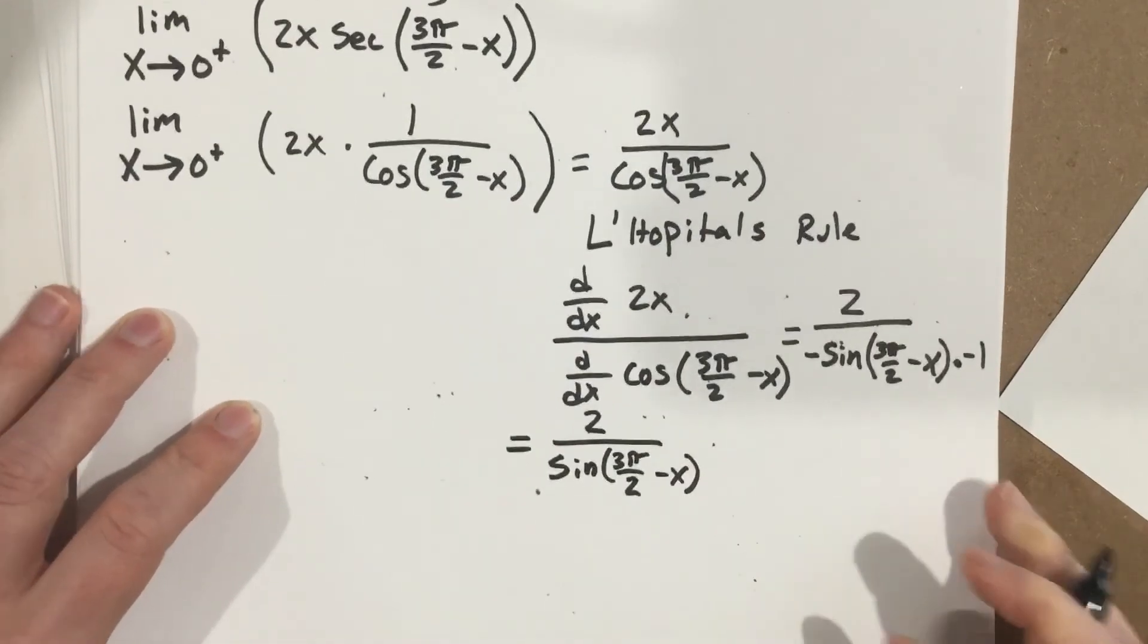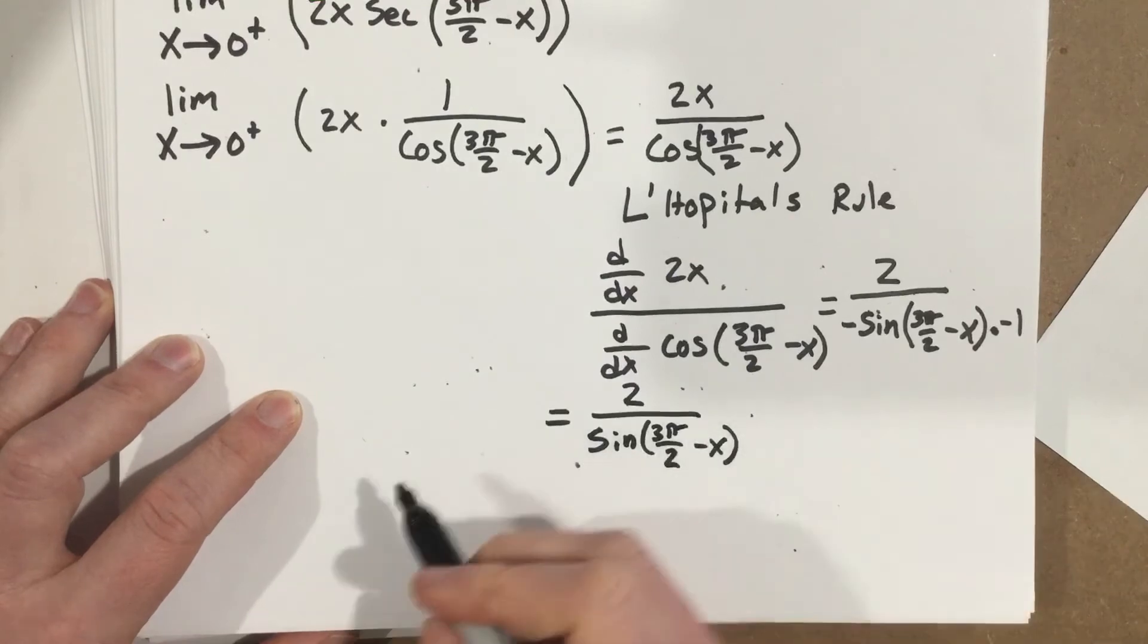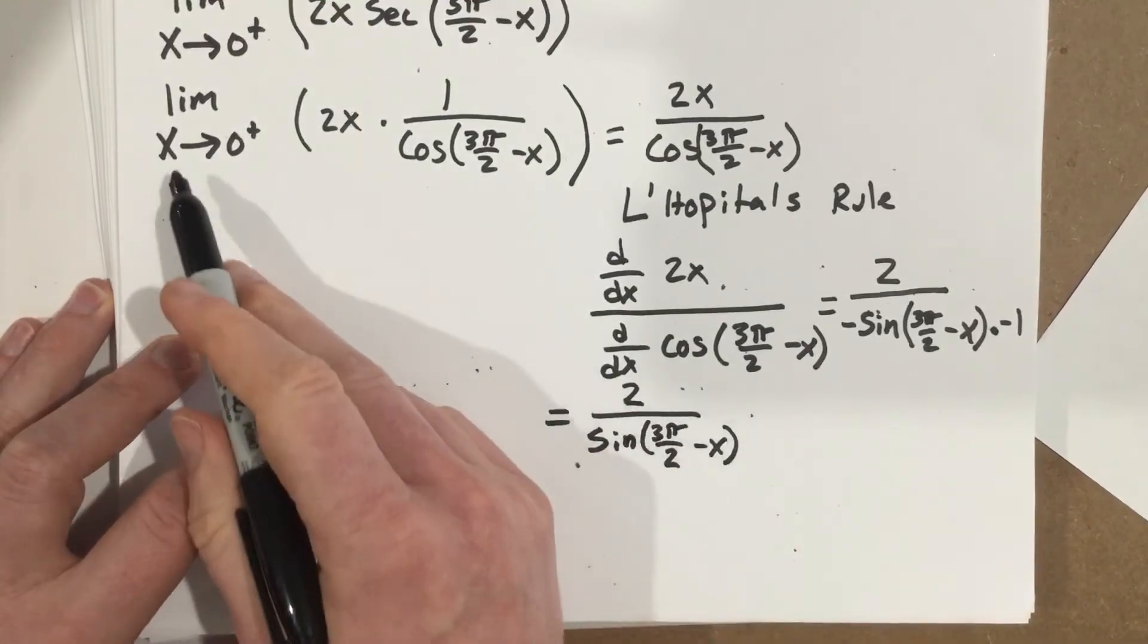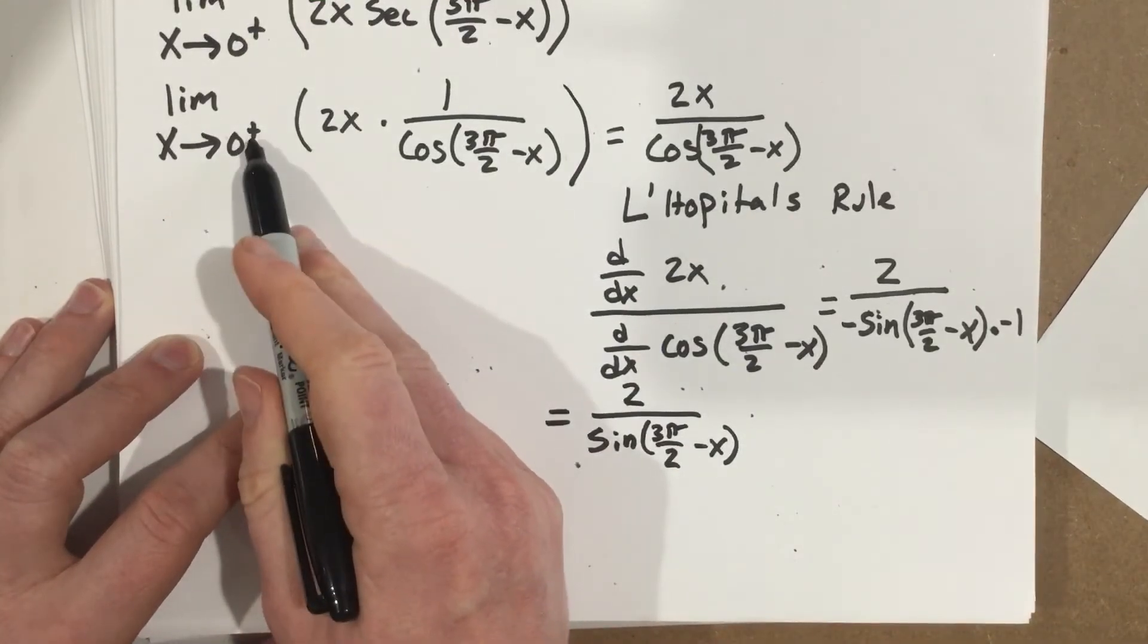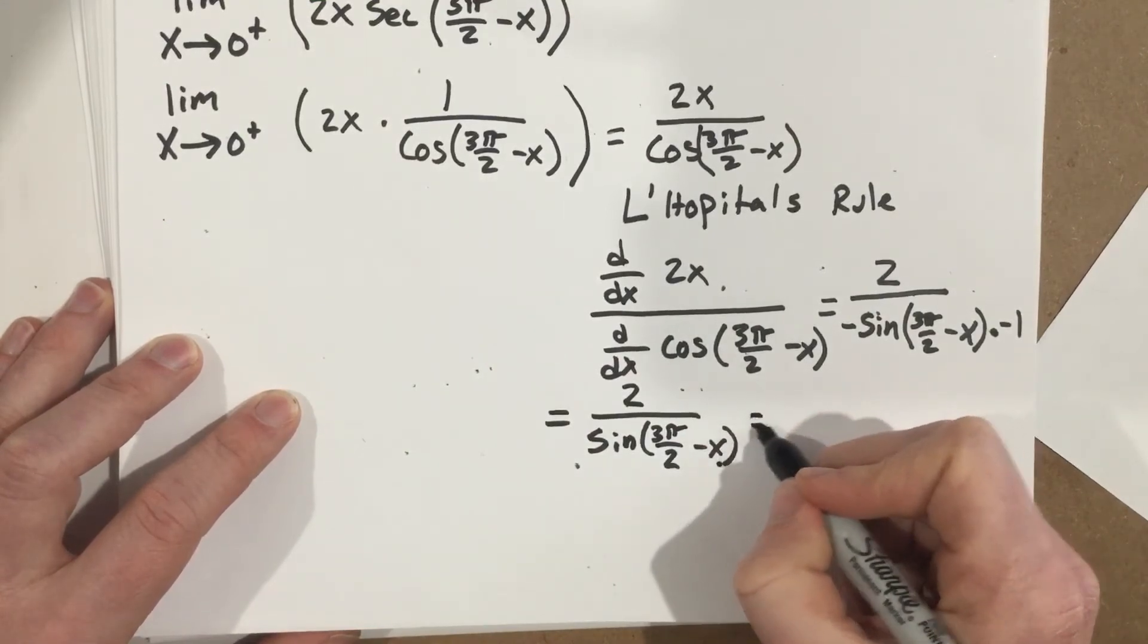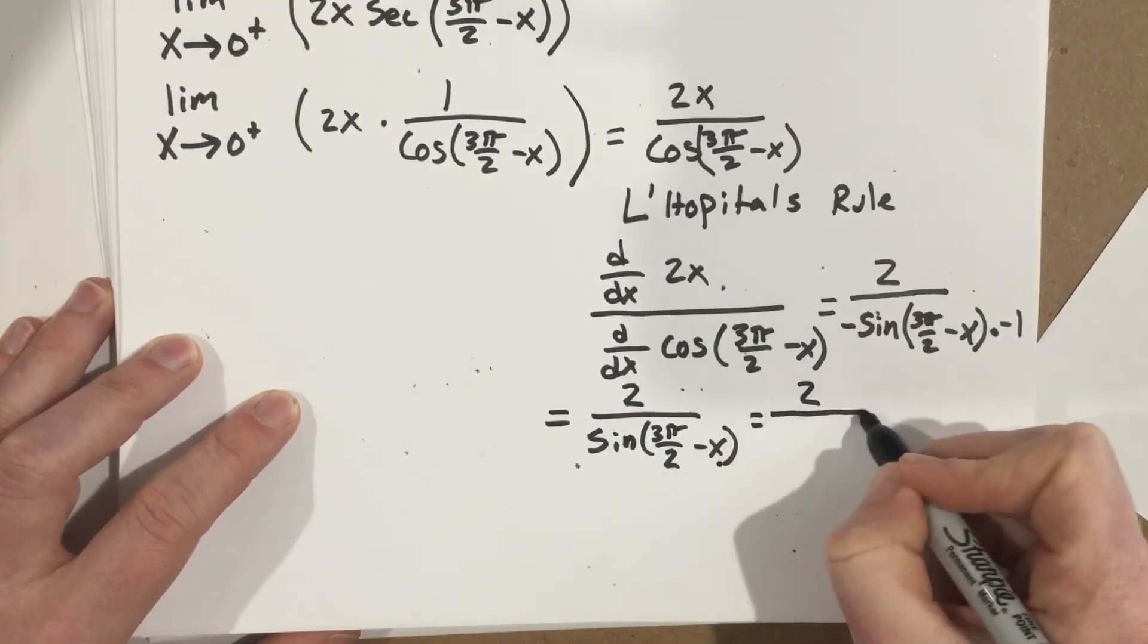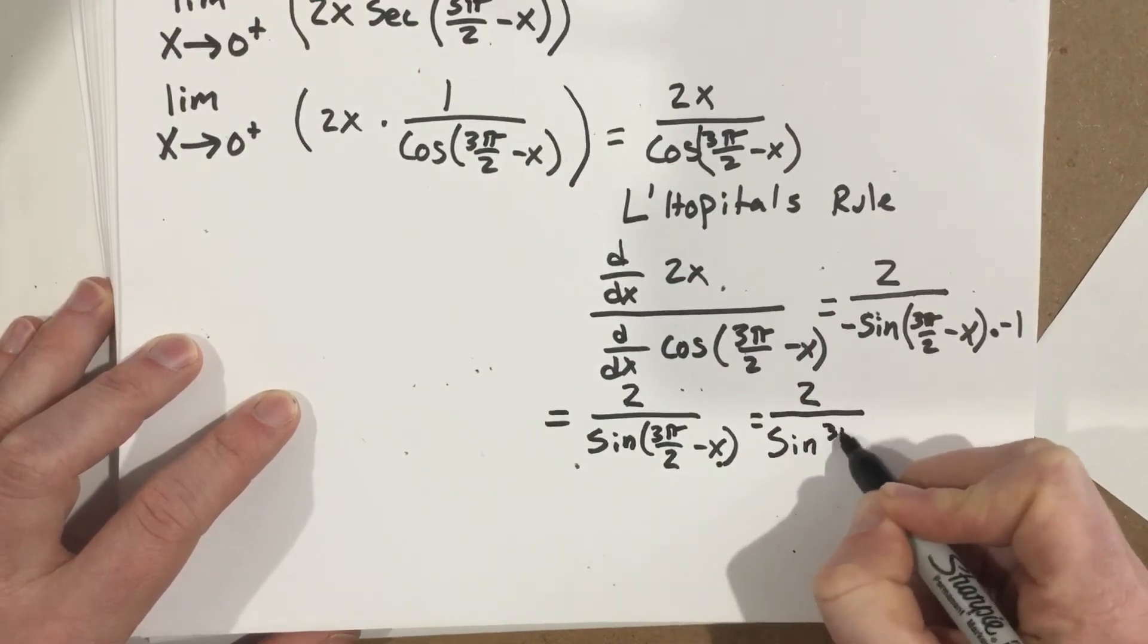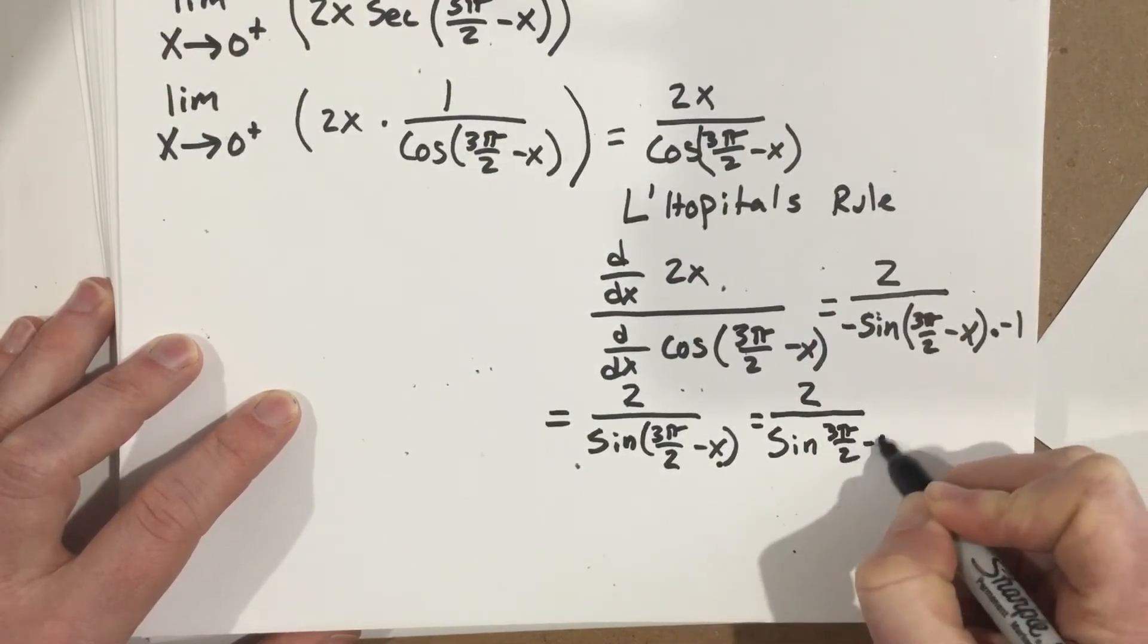Now when I do the limit, as x approaches 0 from the right, that means plug 0 in here. When I plug 0 in there, I get 2 over sine 3π over 2 minus 0.